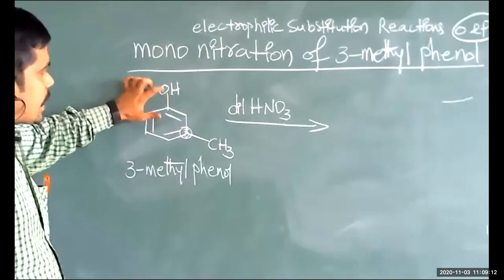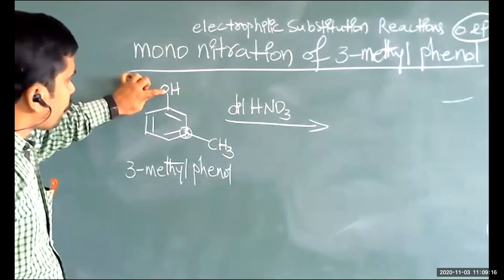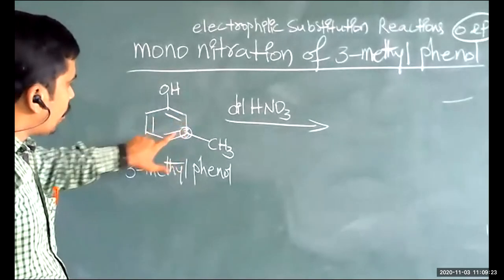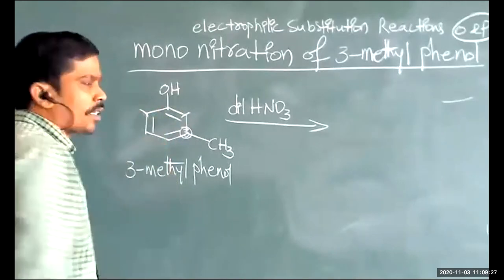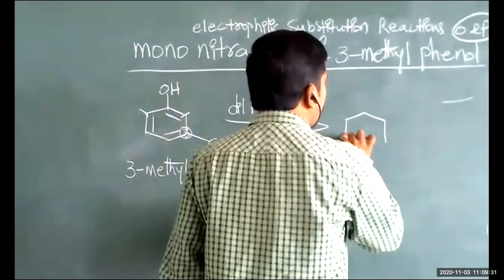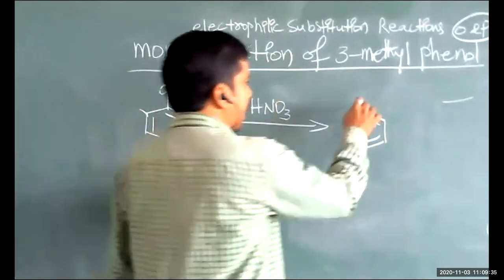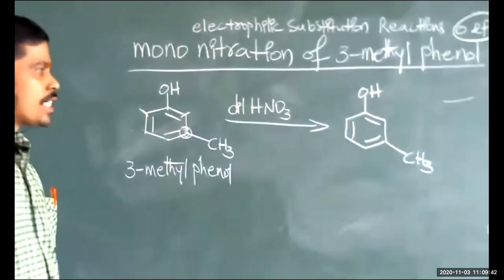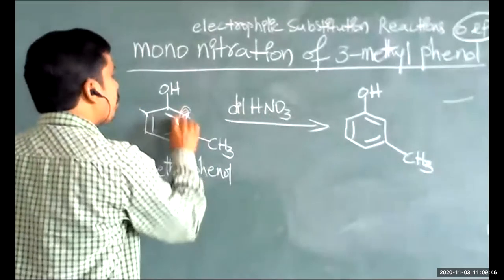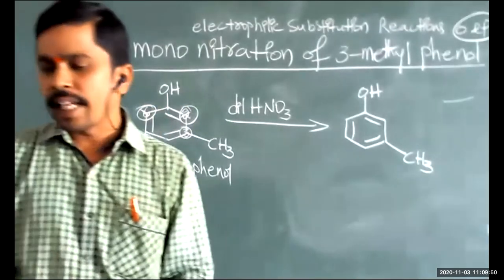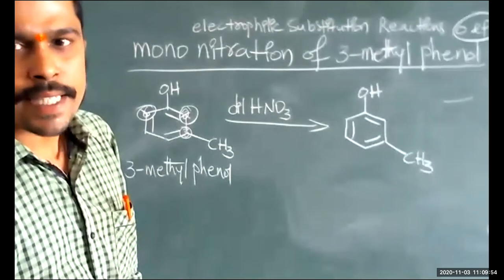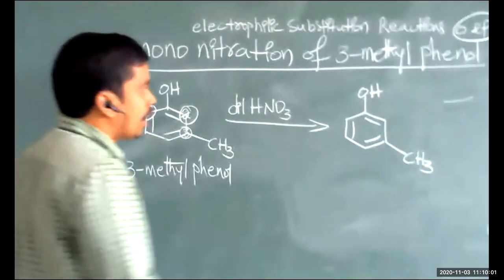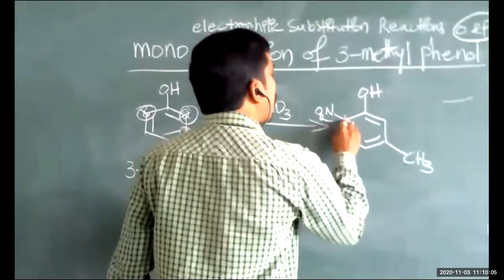Nitration at the second position (ortho) is not favored because OH at C1 and CH3 at C3 are two bulky groups — steric hindrance or repulsion occurs at C2. Therefore, the second position ortho is blocked. However, the sixth position has less steric hindrance, so nitration takes place at C6 to give the ortho product.